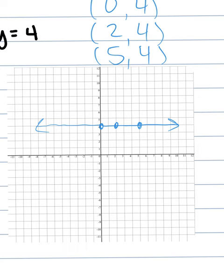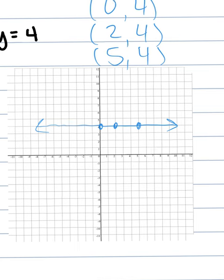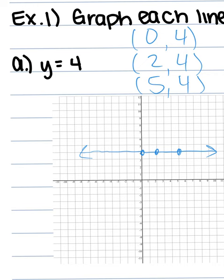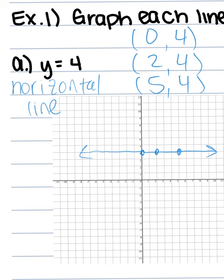Always — when you have y equals a number, you're always going to get a horizontal line. Write that down. Because you're fixing your y value, y can't be anything but 4, but x is free to run left and right. You might think y is vertical since it's up and down — don't fall for that trap. When y equals a number, it's a horizontal line.